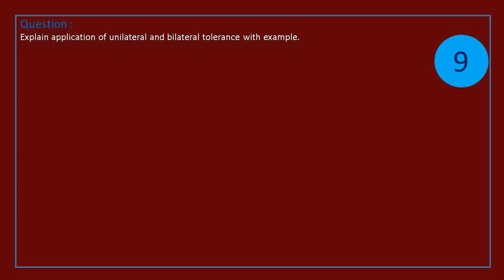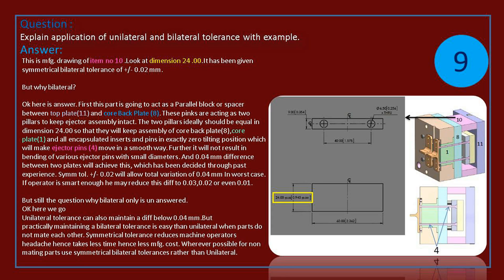Question: explain application of unilateral and bilateral tolerance with example. Answer: this is manufacturing drawing of item number 10. Look at dimension 24. It has symmetrical bilateral tolerance of 0.02 mm. But why bilateral?